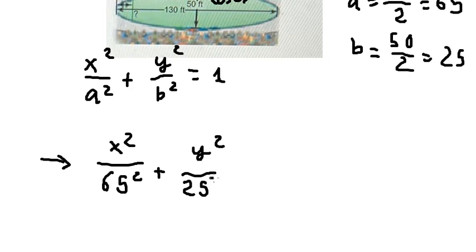And now we have the formula of this ellipse. That is x² over 65² plus y² over 25² equals to 1.